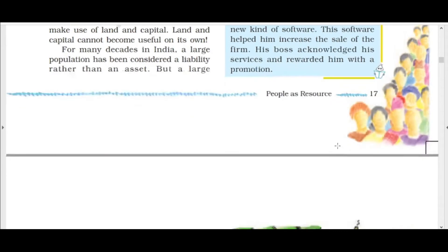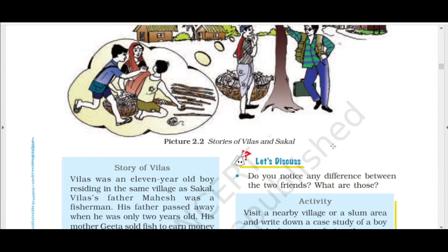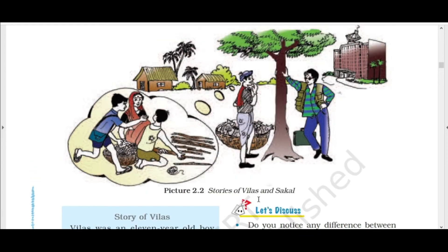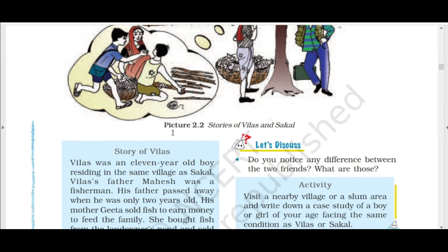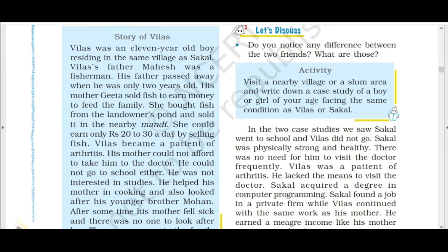Next is the story of Vilas. Vilas was an 11-year-old boy living in the same village as Sakal. His father Magis was a fisherman. When Vilas was only two years old, his father passed away.